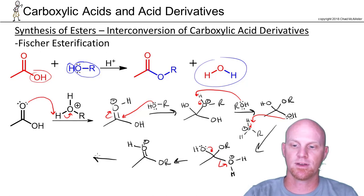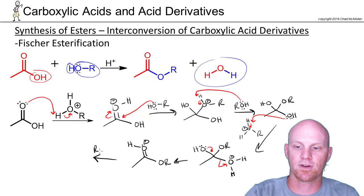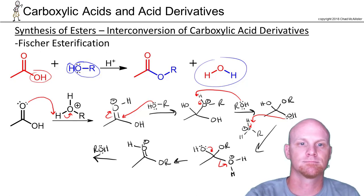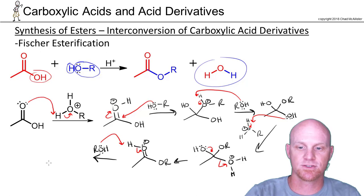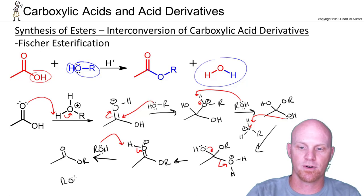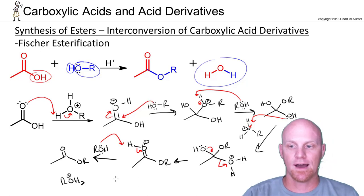It's pretty easy to get to the final step here — we just have to deprotonate. So we bring another molecule of our alcohol in, and that gets us to our ester, forming another protonated alcohol and regenerating our catalyst right back at the beginning. That's your mechanism for the Fischer esterification.